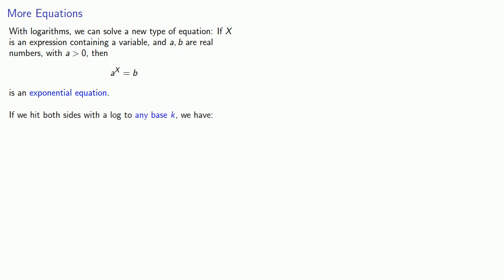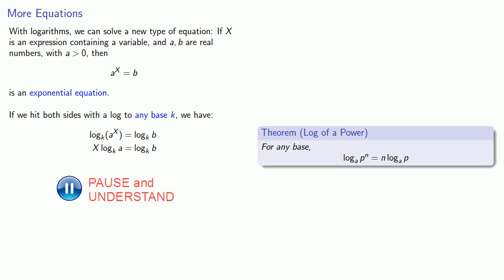Now if we hit both sides with the log to any base k, we have log to base k of a to the x equals log to base k of b. But we have a power rule for exponents, so this exponential expression x can come out front and we can solve for that expression.